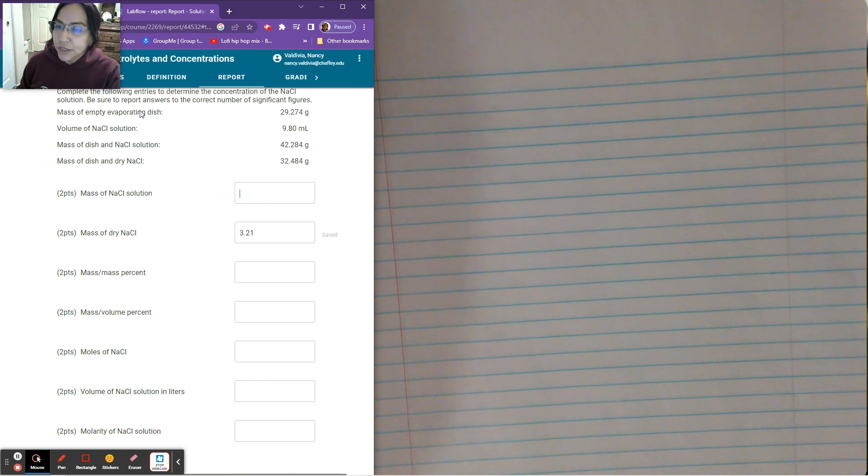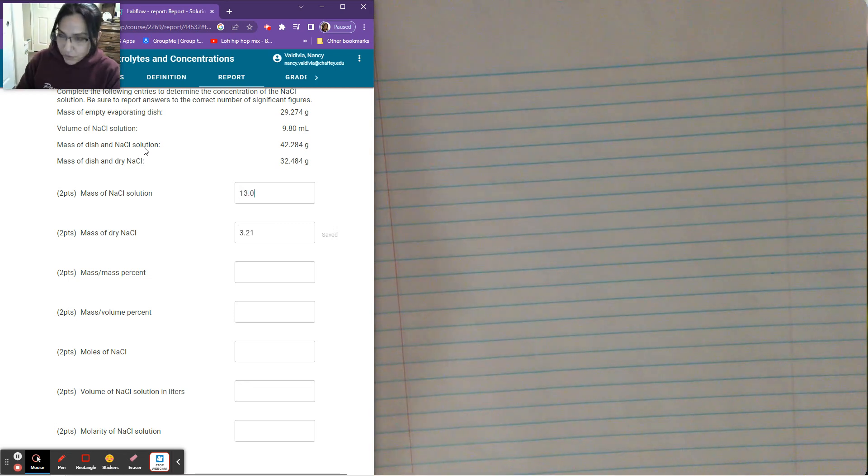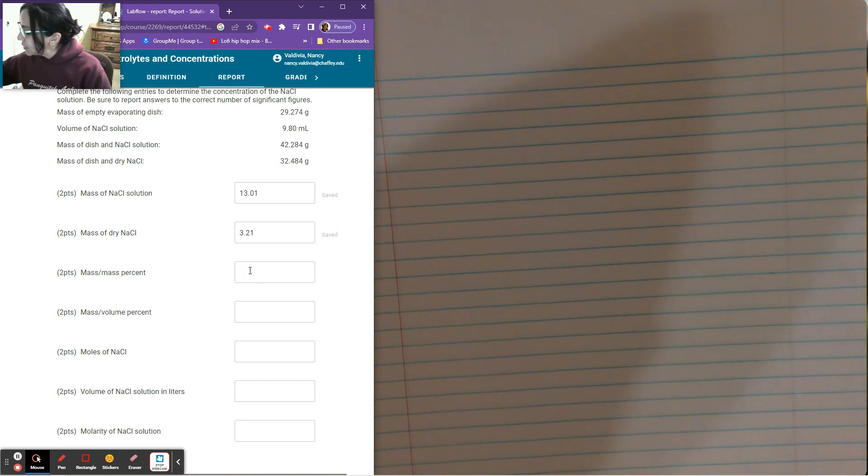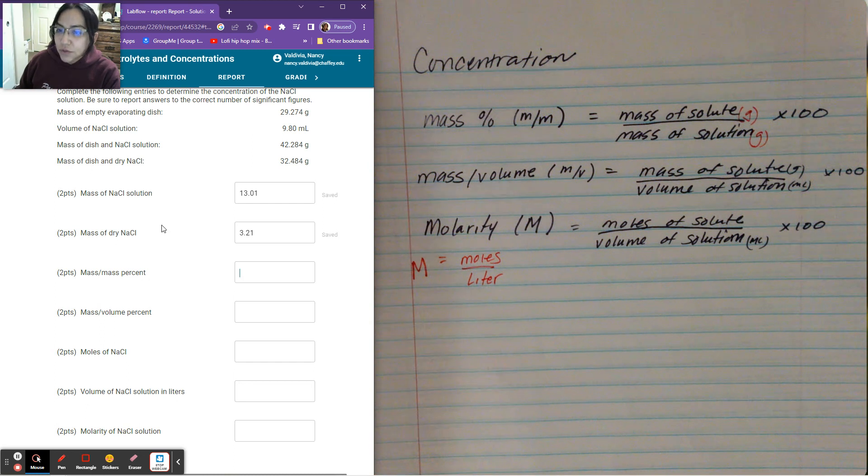And then to find the solution, I'm going to take the evaporating dish minus the solution. So that's the 42.284 minus the mass of my solution, which is 29.274. And I got 13.01. So now what's the mass per mass percent? And if we recall by looking at our equation, that's the mass of the solute divided by the mass of the solution. So the mass of my solute is 3.21. And the mass of my solution is 13.01.